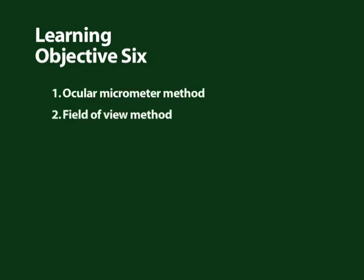In this section we have examined how to calculate the size of an object by two methods: with an ocular micrometer and by using the field of view. This is explained further in the booklet accompanying this video.